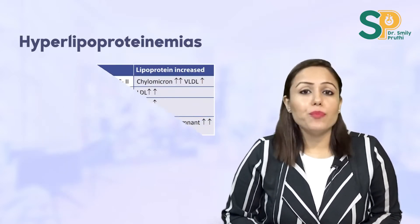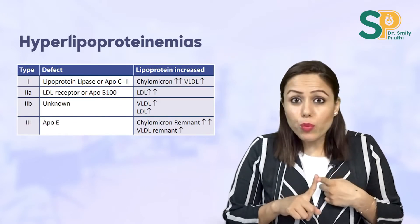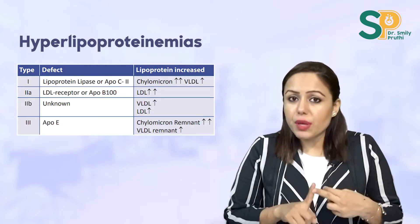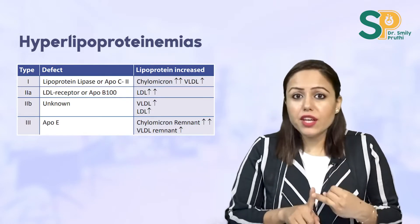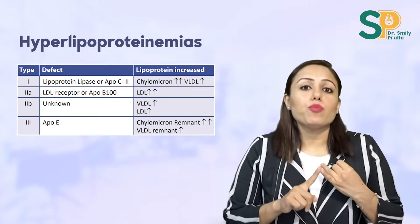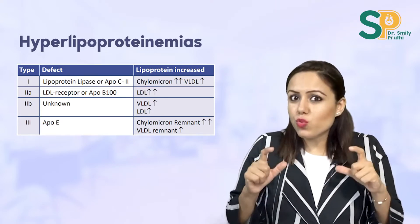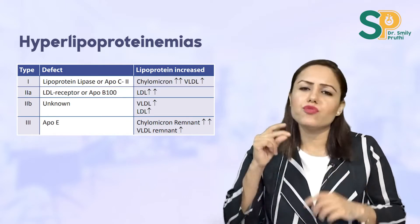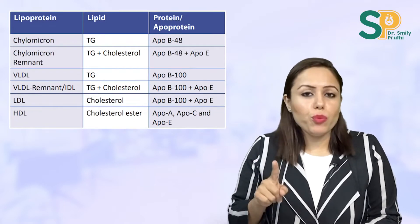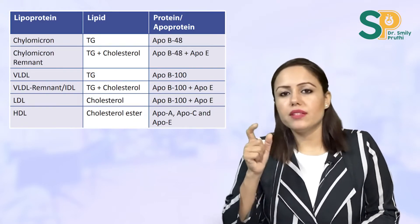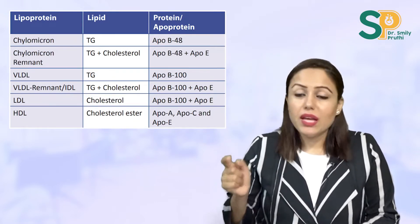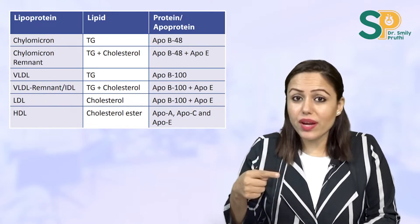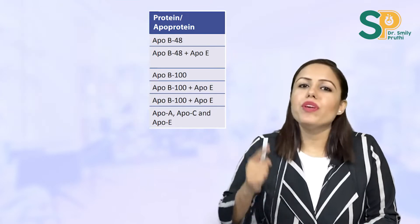Read hyperlipoproteinemias: type 1 — lipoprotein lipase deficiency; type 2a — defect in LDL receptor; type 2b — both VLDL and LDL are raised; type 3 — remnants are increased. There is just one table of these four hyperlipoproteinemias which is very easy to revise. Also do the table of lipoproteins — which lipoprotein contains which lipid and which protein, like chylomicron has exogenous triglyceride as lipid and ApoB48 as protein.